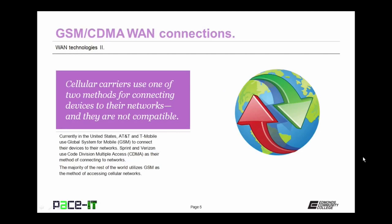All cellular carriers use one of two methods for connecting devices to their networks, and those methods are not compatible. Currently in the United States, AT&T and T-Mobile use the Global System for Mobile, or GSM standard, to connect their devices to their networks. Both Sprint and Verizon use Code Division Multiple Access, also known as CDMA. The majority of the rest of the world utilizes GSM as the method for cellular network access.